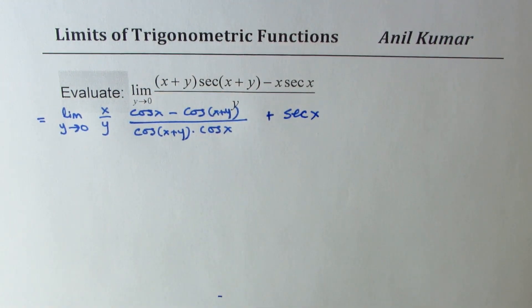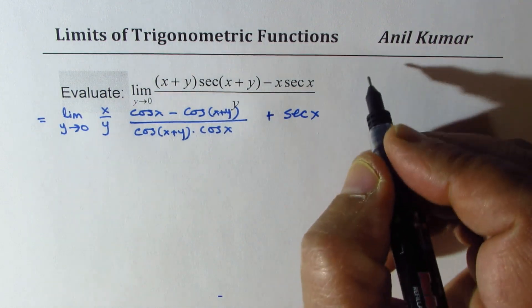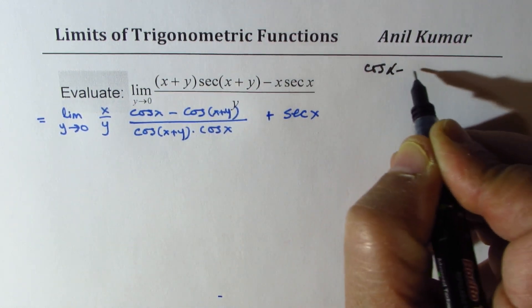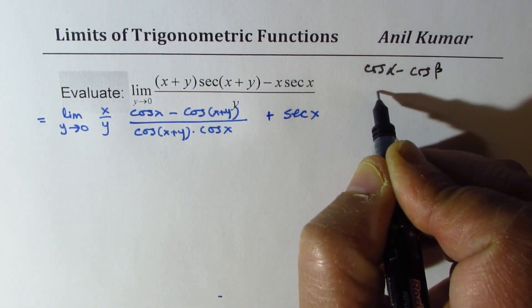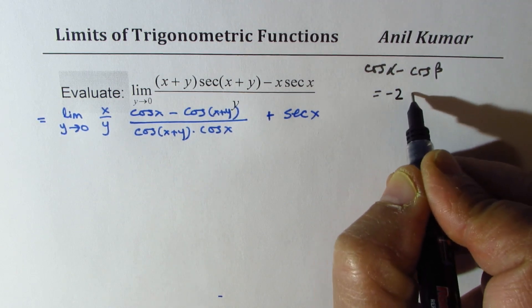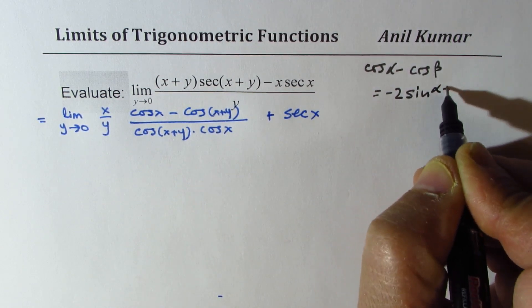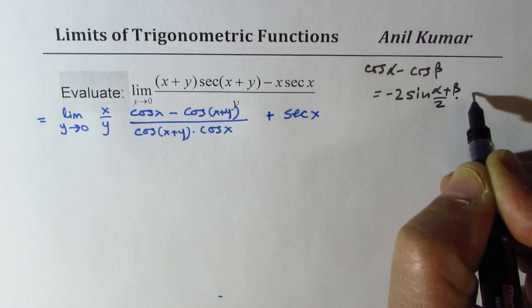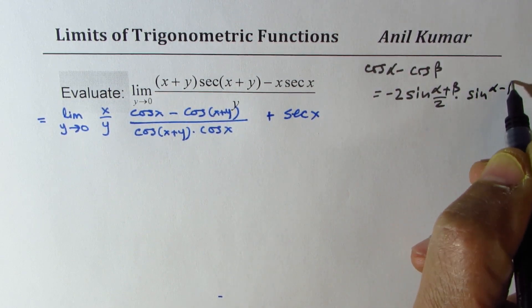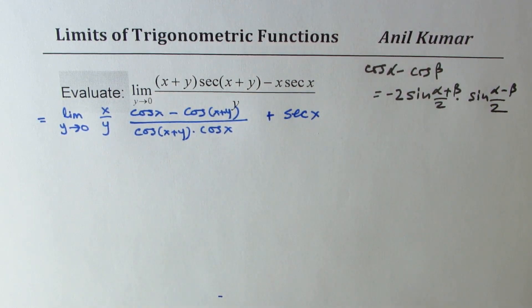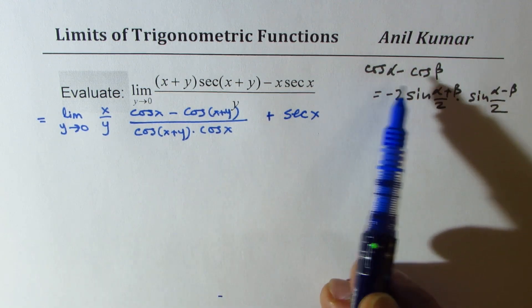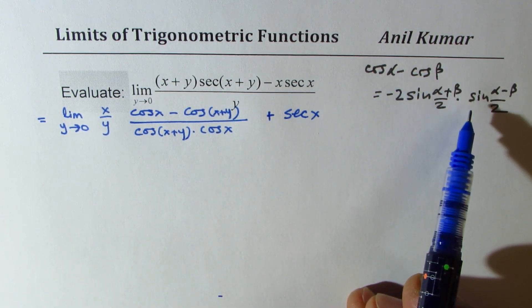That was the expression. Now we are going to apply the formula which is cos alpha minus cos beta equals to minus 2 sin alpha plus beta by 2 times sin alpha minus beta by 2. That is the compound angle formula to convert difference into product.